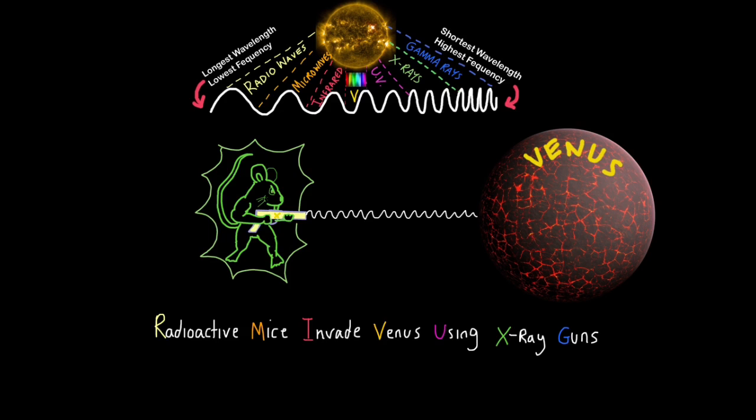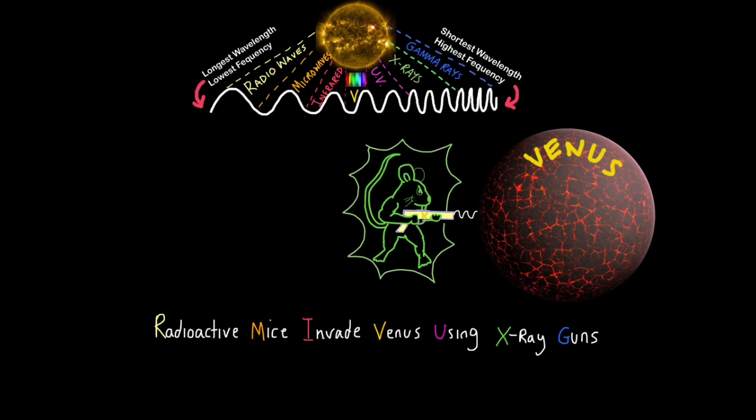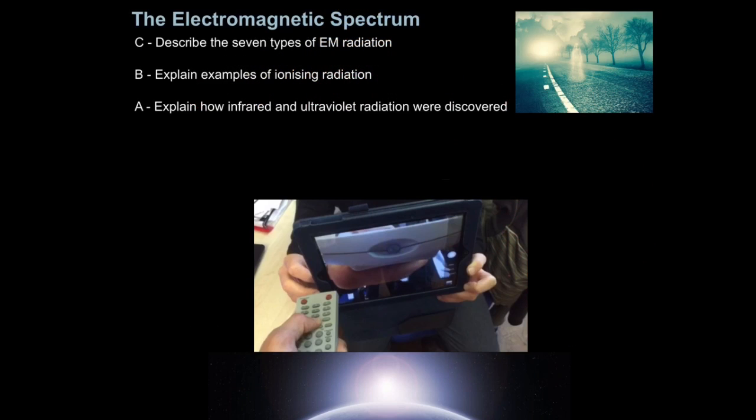These are important facts you'll need to know for an exam. They usually come up as multiple choice questions, which you tick. You also need to remember the different types of radiation, and here's a little word rhyme to help you remember it. So, radioactive mice invade Venus using X-ray guns. Radioactive, R for radio, mice, M for microwave, invade, I for infrared, Venus, V for visible, using U for UV, X for X-ray, and G, guns for gamma. And that's how you describe the seven types of EM radiation.